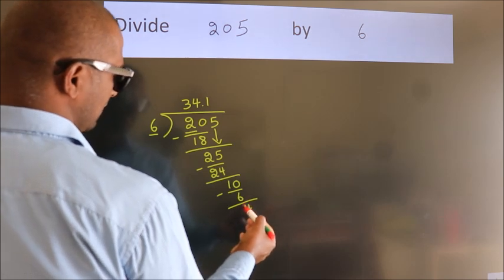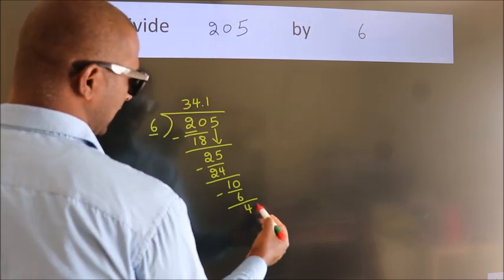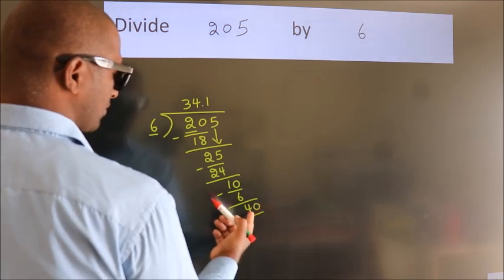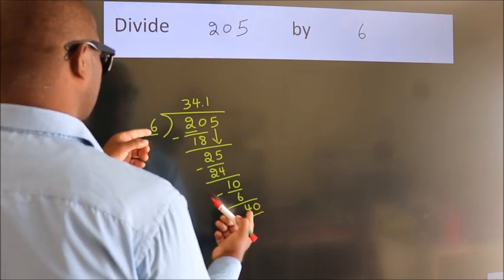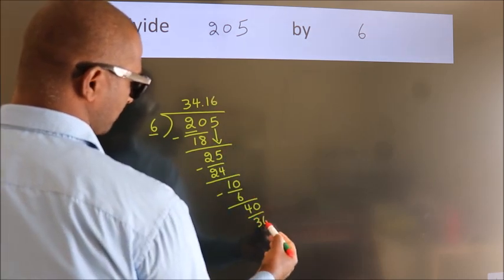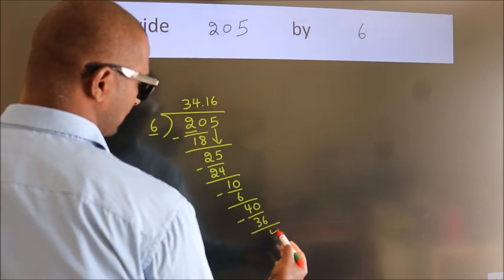After this, we already have the decimal, so directly take 0. So, 40. A number close to 40 in the 6 table is 6 times 6, 36. Now we subtract. We get 4.